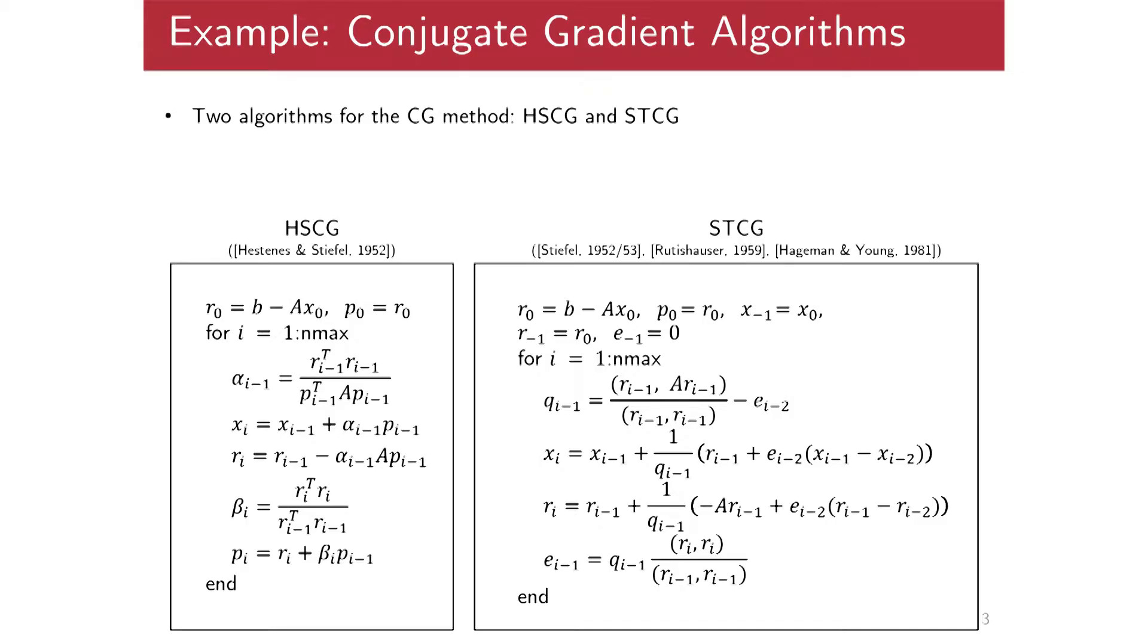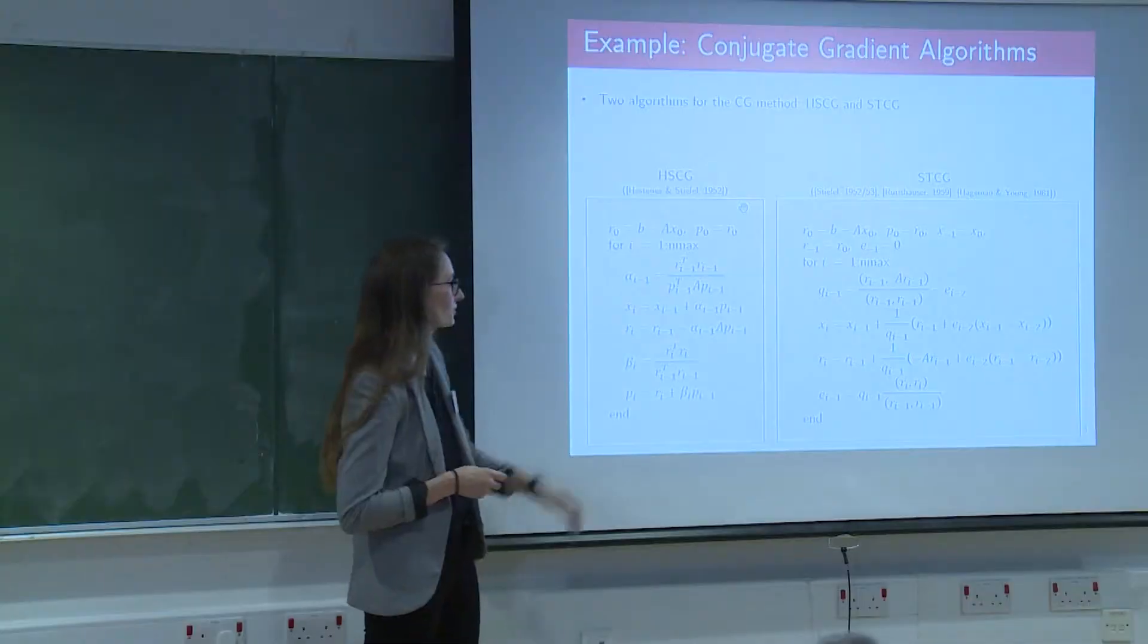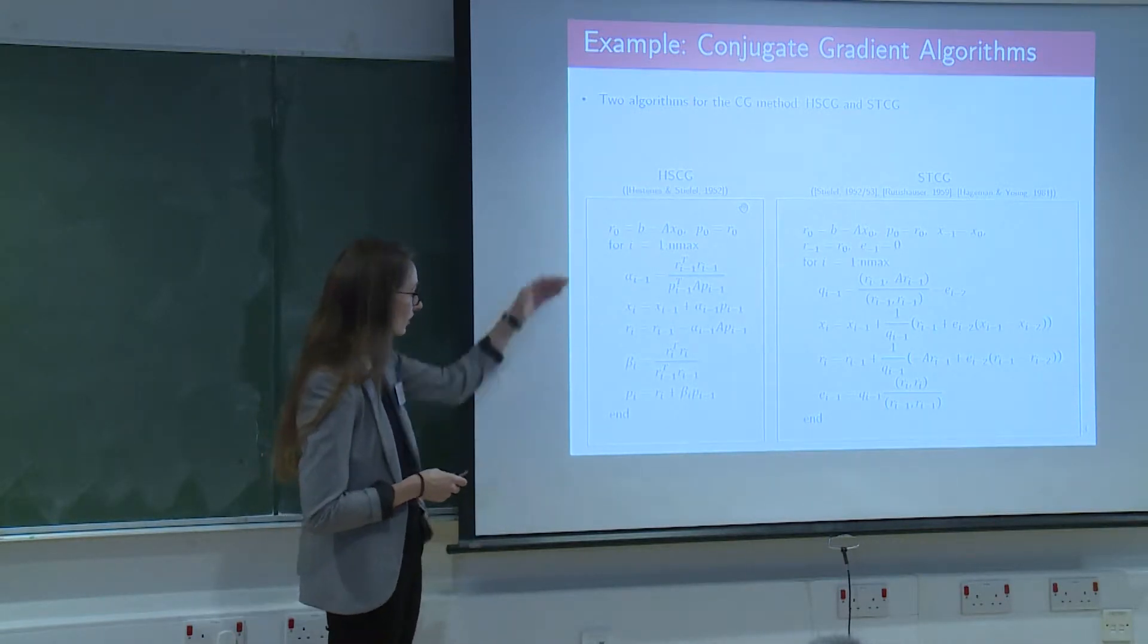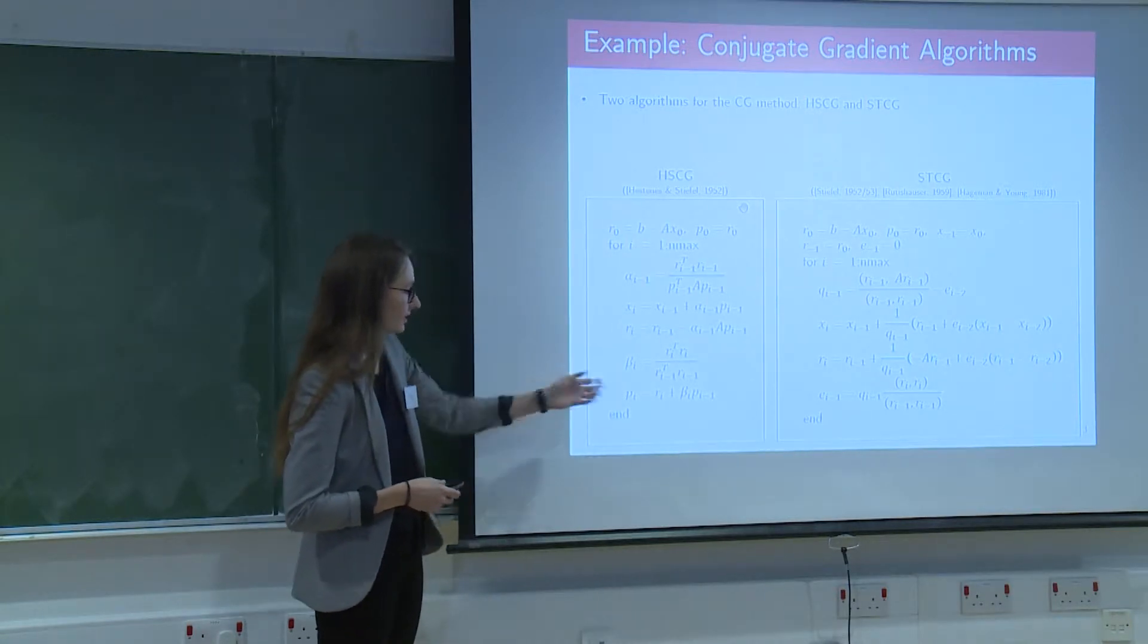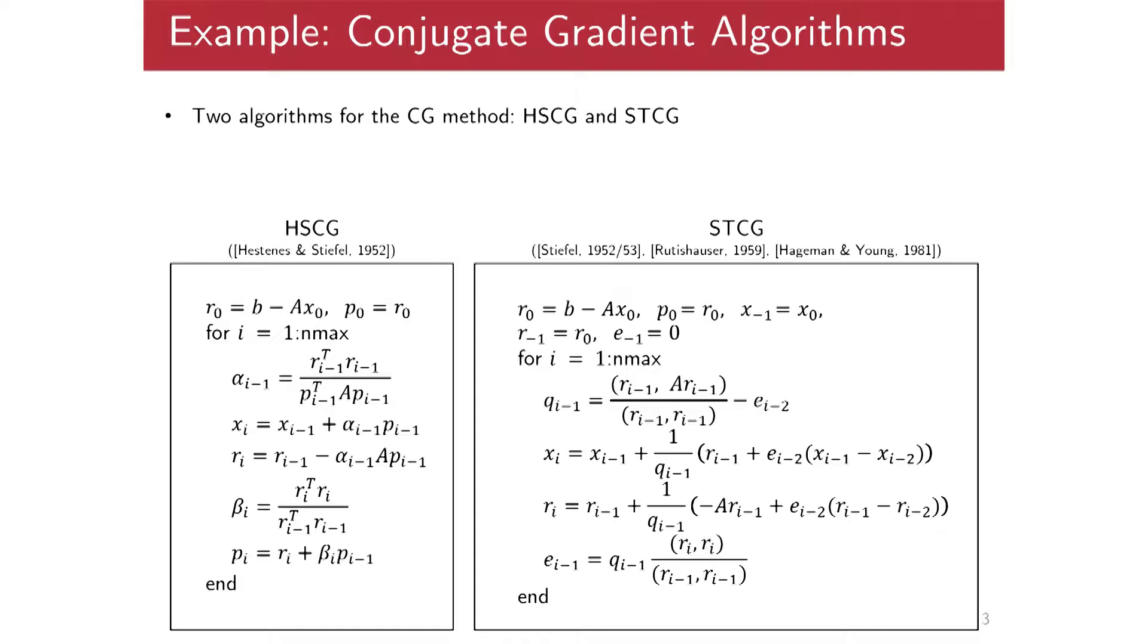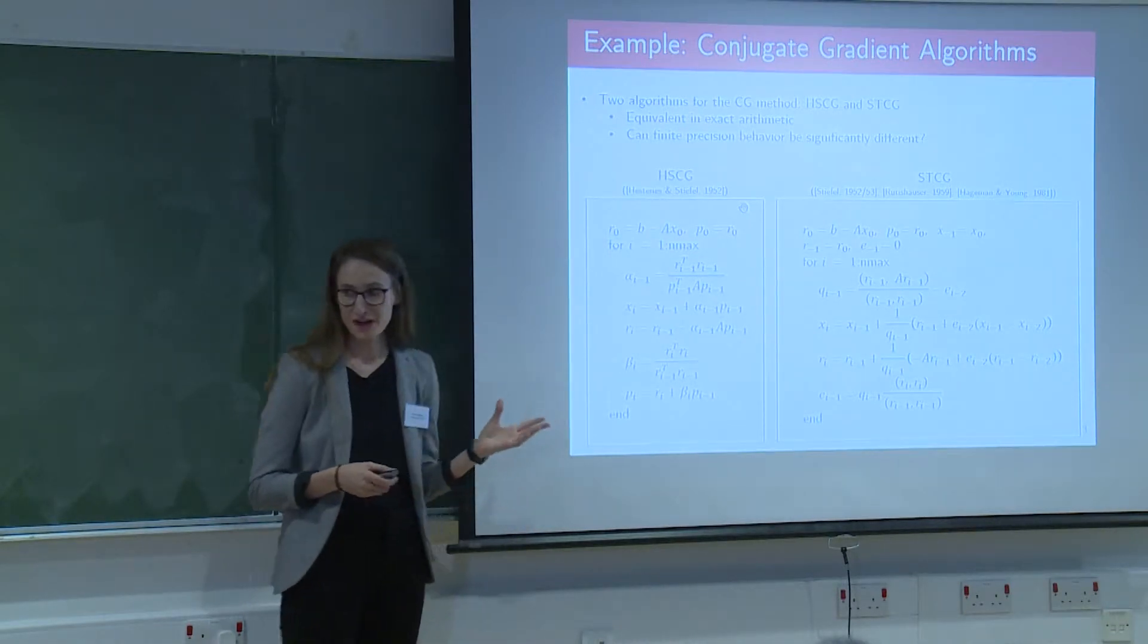All right, so my example today will be in iterative Krylov subspace methods, and specifically conjugate gradient algorithms. All right, so I have here two kind of textbook algorithms for the CG method. Okay, so the left being that due to Hastenisen Stiefel, and on the right this is another version due to Stiefel and also developed by Rudish-Hauser. Okay, so this version on the left, this is the version that is based on having three two-term recurrences, so we have our approximate solution vector, our residual vector, and a direction vector that we're updating. On the right, basically the idea is here. Here we're computing kind of the LU factors independently of the Yocobie matrix T, and here we're actually kind of doing two three-term recurrences, which compute the entries in this tridiagonal matrix. And so this is kind of a very slight change. These two algorithms, if you ran them in infinite precision, they would give you the same answers. And so the question is, can finite precision behavior really be that much different between the two?